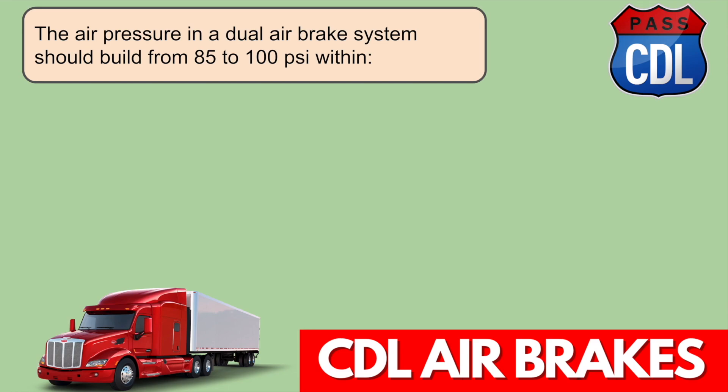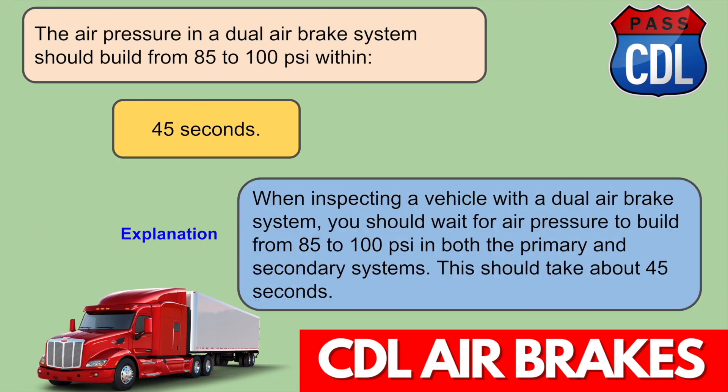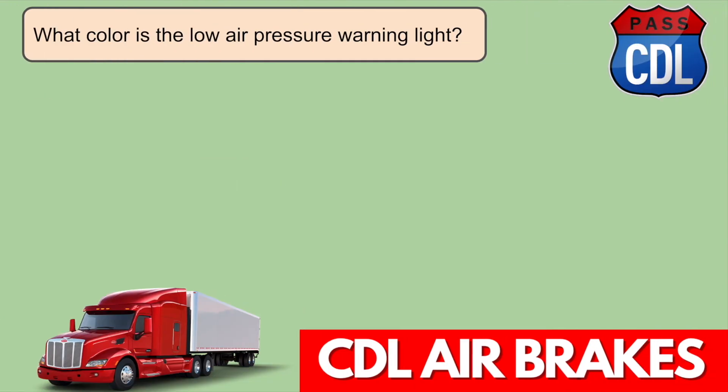The air pressure in a dual air brake system should build from 85 to 100 PSI within 45 seconds. When inspecting a vehicle with a dual air brake system, you should wait for air pressure to build from 85 to 100 PSI in both the primary and the secondary systems. This should take about 45 seconds.